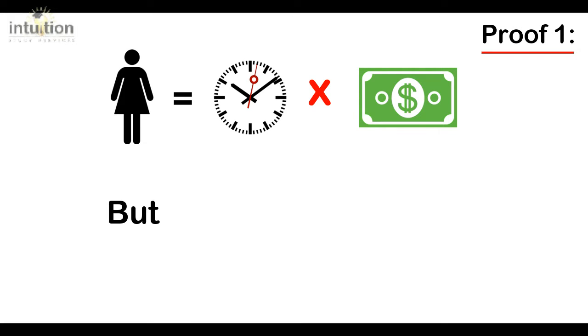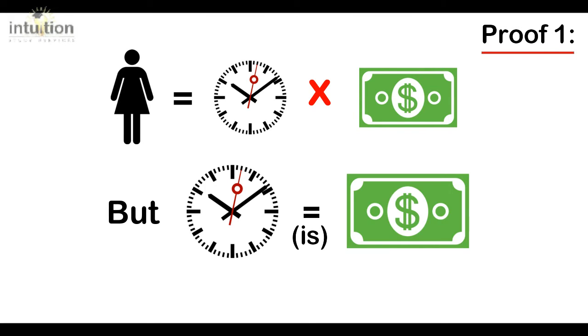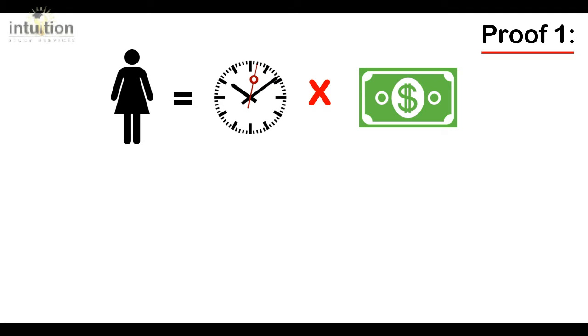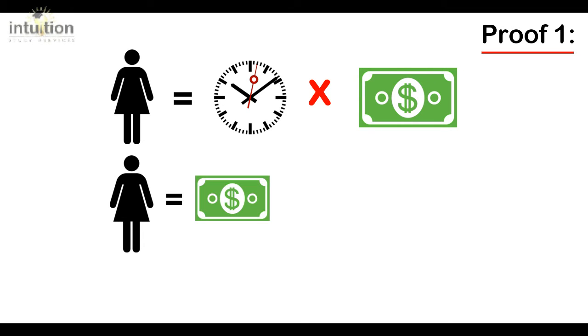But it's also a known fact that time is money. So with simple substitution, we find that girls equals money times money or money squared.